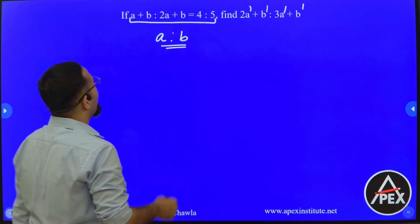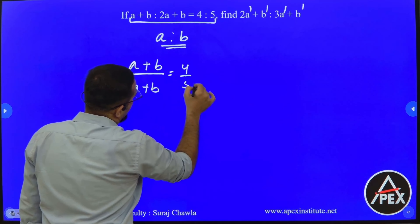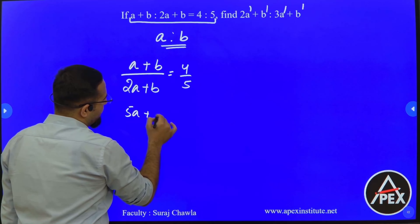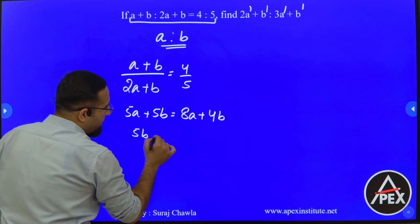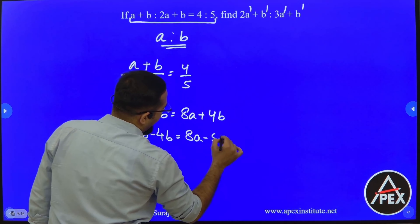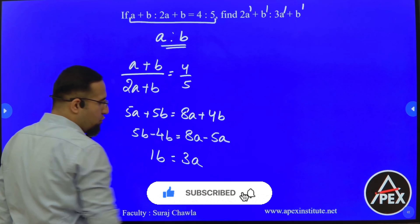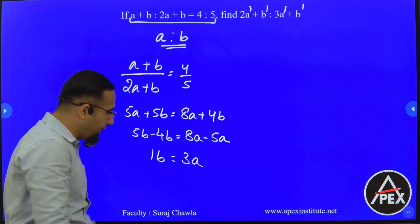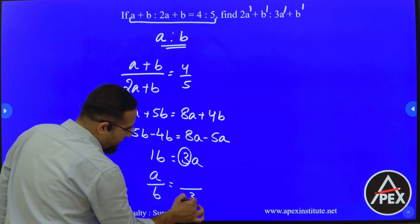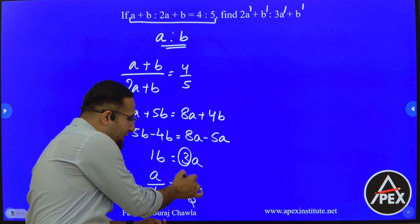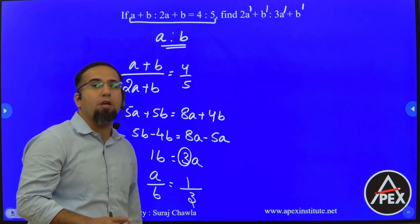Writing it in fractional form: A plus B divided by 2A plus B equals 4 is to 5. Cross multiplying: 5A plus 5B equals 8A plus 4B. Transposing: 5B minus 4B equals 8A minus 5A, giving B equals 3A. If the coefficient of A is 3, cross multiplying puts 3 in the denominator; coefficient of B is 1, so 1 goes in the numerator. Therefore A is to B equals 1 is to 3.